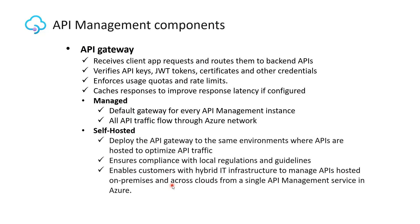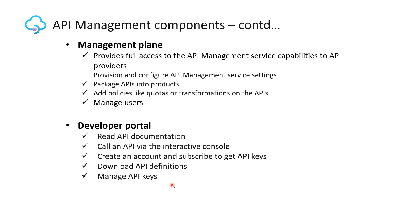API Management offers two types of gateways: managed and self-hosted. The managed gateway is the default gateway component deployed in Azure for every API Management instance in every service tier. The self-hosted gateway is useful for hybrid and multi-cloud scenarios where there is a requirement to run the gateways outside of Azure, in the same environments where API backends are hosted.